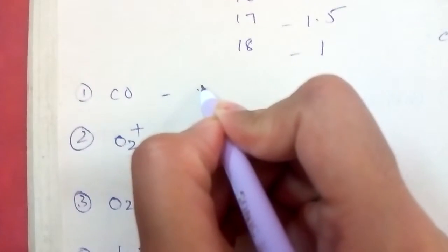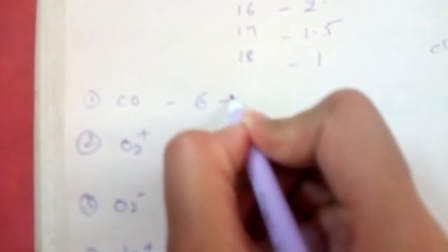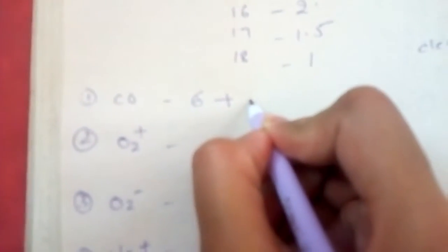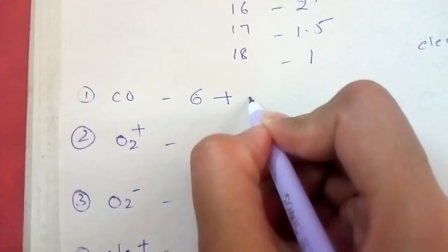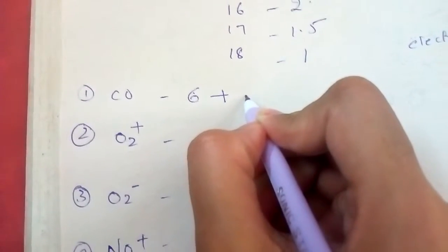Now examples solve. For example, carbon monoxide CO. Carbon atomic number is 6, 6 plus, and oxygen atomic number is equal to electron number oxygen.